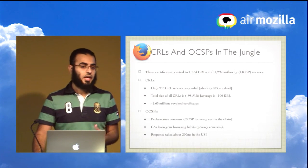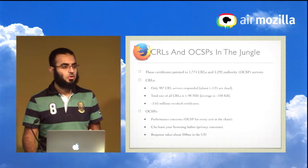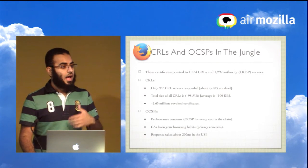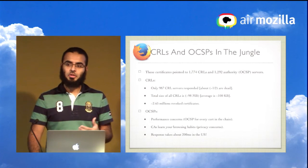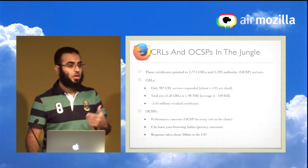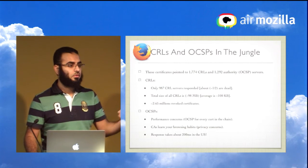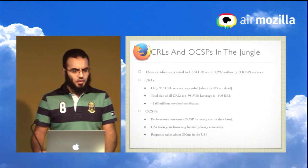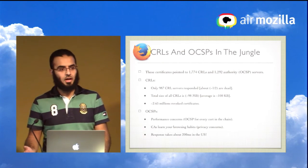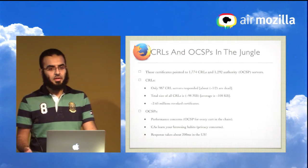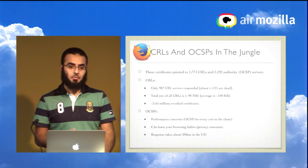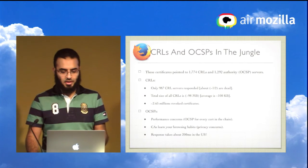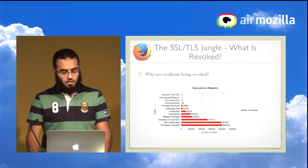With OCSP there's a performance concern, because you have to ping the OCSP server for every certificate. More alarming is a privacy concern: CAs could profile users by logging every certificate ping — recording that this user visited this site — and building a profile. With a good connection in the US, you're looking at 200 milliseconds for an OCSP response, and that could be a bigger problem on Firefox OS where resources are scarcer.